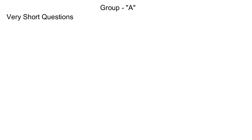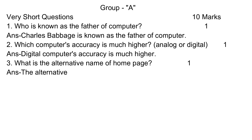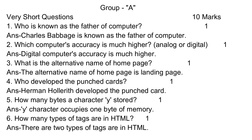Group A: Very short questions. One: Who is known as the father of computer? Answer: Charles Babbage is known as the father of computer. Two: Which computer's accuracy is much higher — analog or digital? Answer: Digital computer's accuracy is much higher. Three: What is the alternative name of home page? Answer: The alternative name of home page is landing page.